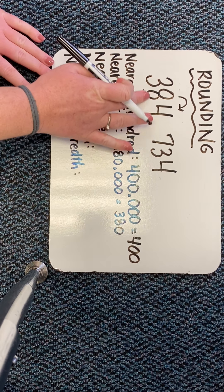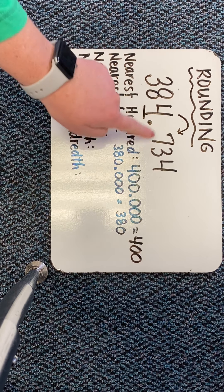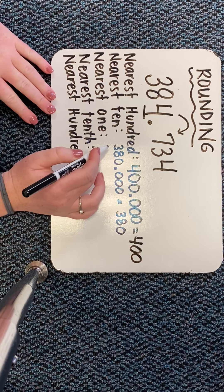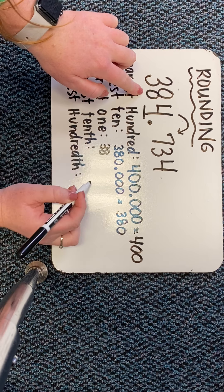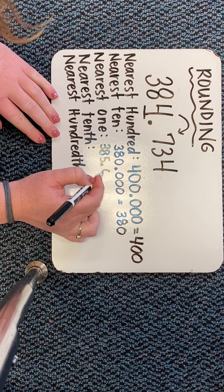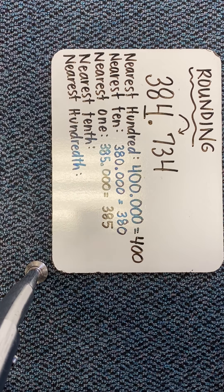Let's look at the nearest one. We said this was my ones place. Is this seven going to bump the four up to a five or keep it a four? You're exactly right. It's going to bump it up to a five because seven is closer to ten than it is to zero. Everything before the underline stays the same, this would change to a five and everything else would change to zeros, which is saying rounded to the nearest ones place, this number would be 385.